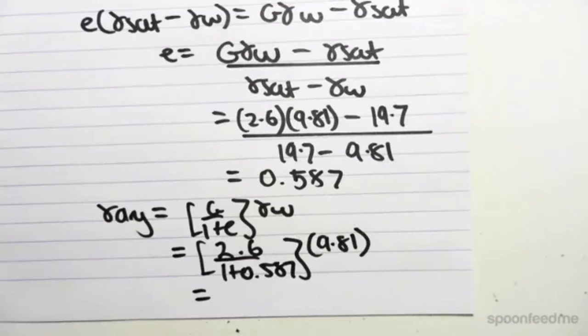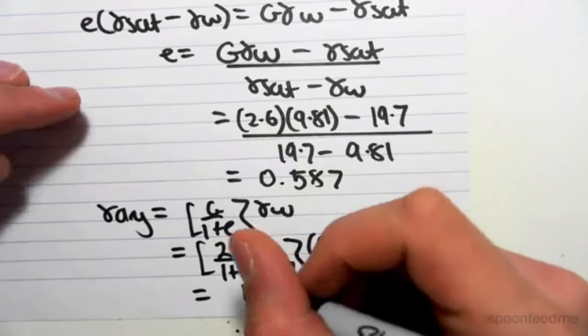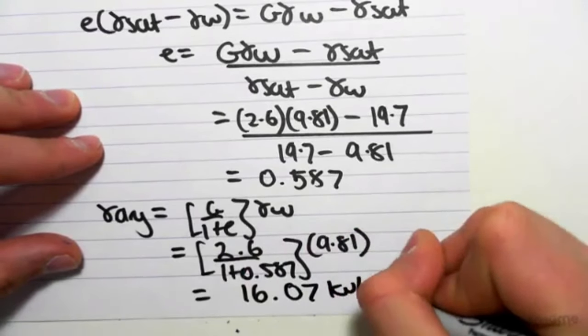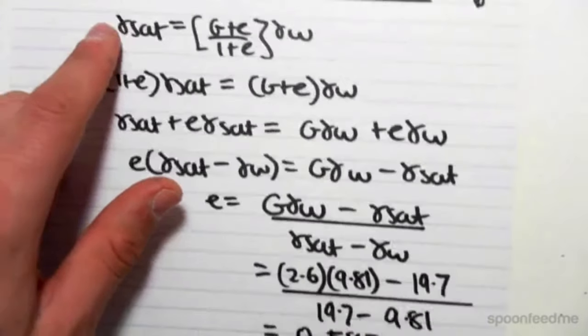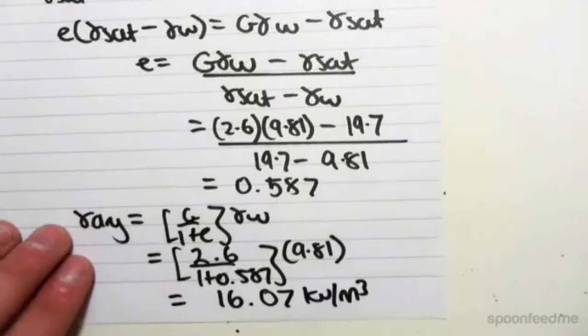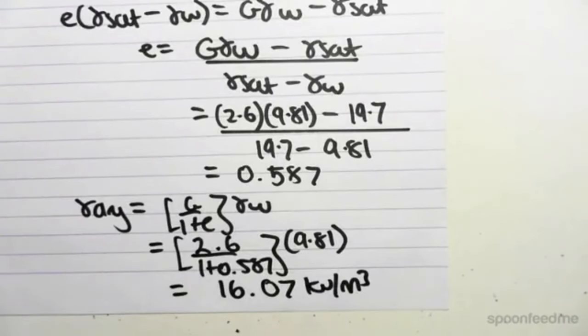And we get 16.07. So it's good just to check to make sure that our gamma dry is smaller than our gamma sat, which should make sense. So 16.07, we have our gamma dry.